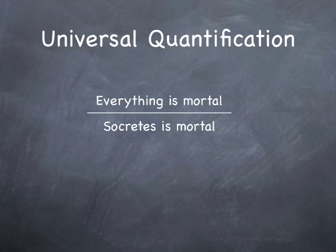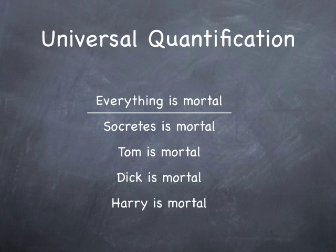The universal quantifier is even easier, now that you know what the existential quantifier is. Very simple. Here's another pair of sentences. So if everything is mortal, then Socrates is mortal. The truth of the first sentence implies the truth of the second sentence. If everything is mortal, Tom is mortal, Dick is mortal, Harry is mortal. Same kind of thing.